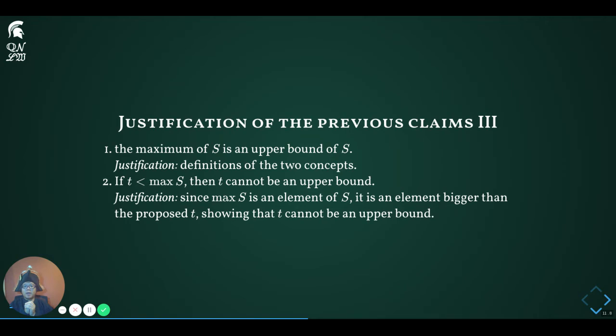Let's prove the first statement: the maximum is a supremum. The proof is just pushing definitions around. First, the maximum has to be an upper bound, since every element of the set is no greater than the maximum. Second, there cannot be a smaller upper bound, because the maximum is an element of the set — so any number less than the maximum is less than at least one element of the set, disqualifying it from being an upper bound.